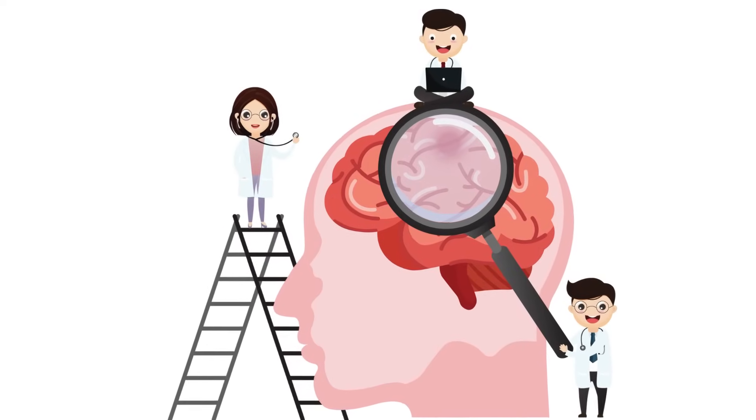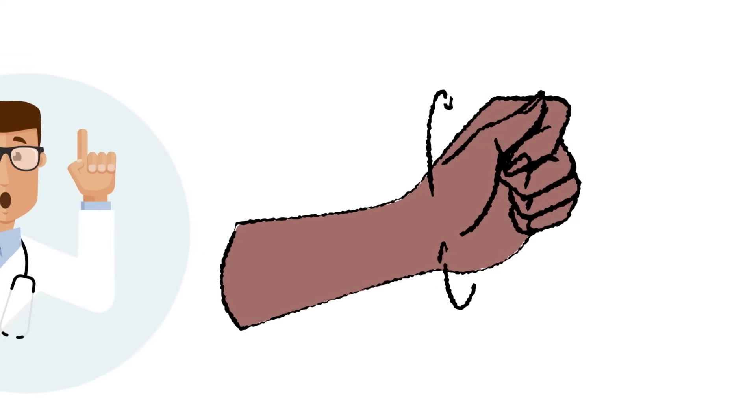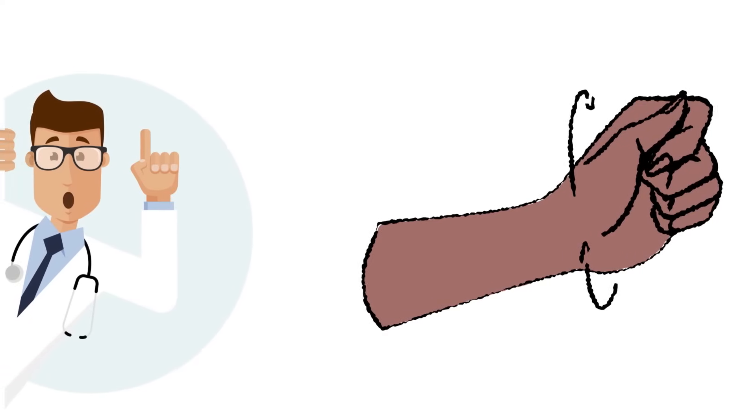Neuroscientific research has shown that our brains make decisions before we become consciously aware of them. In a groundbreaking study by Benjamin Libet in the 1980s, participants were asked to perform a simple motor task, flicking their wrist, whenever they felt the urge to do so.